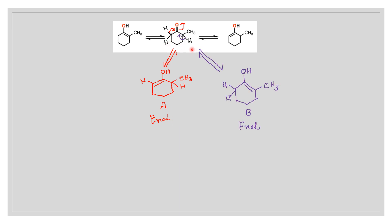When the right-hand side alpha hydrogen participates in keto-enol tautomerism, we get compound B. Now there are 2 types of enol forming. We have to check which one is more stable.